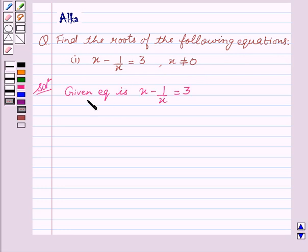Now let's start with the solution. Our given equation is x minus 1 upon x equal to 3 which can also be written as x square minus 1 equal to 3x or x square minus 3x minus 1 equal to 0.